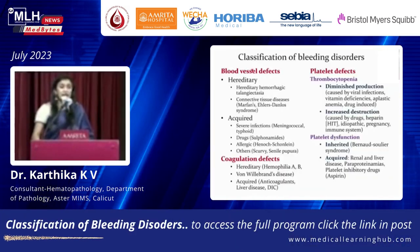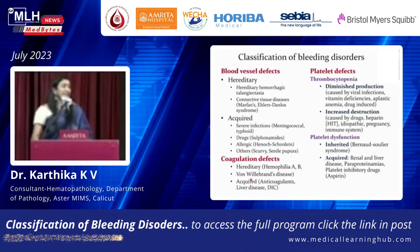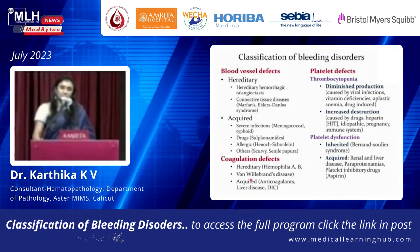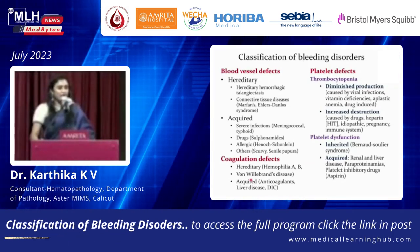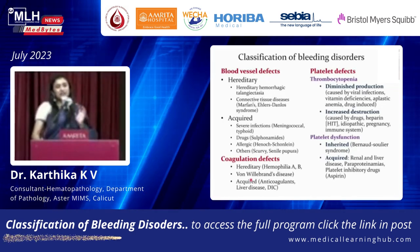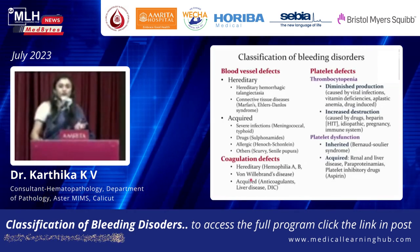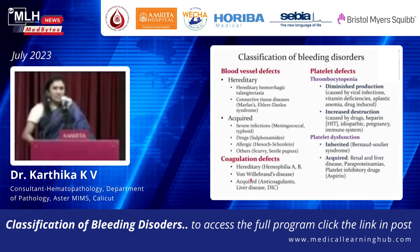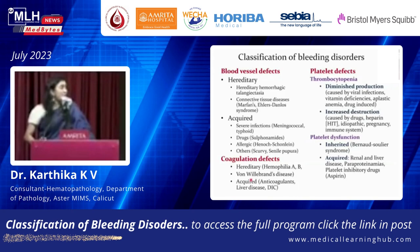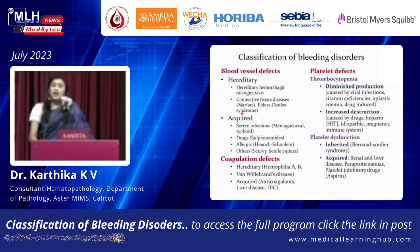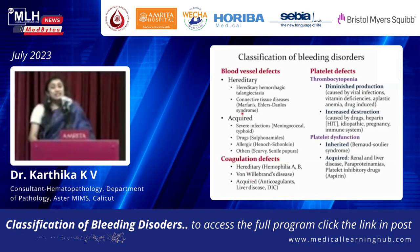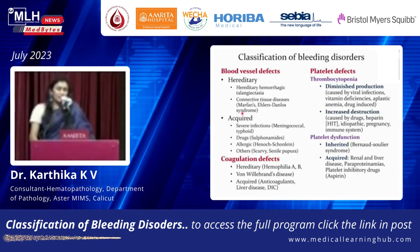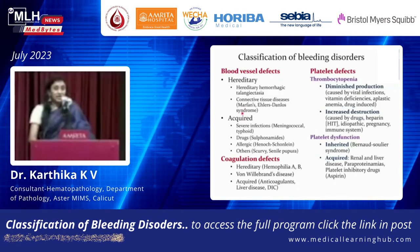Bleeding can occur in the blood vessel, in the platelet, or in the coagulation pathway. In the blood vessel, it can be acquired or inherited. Any defect in the structure or function of the blood vessel can cause bleeding. Common examples are vasculitis, scurvy, and connective tissue disorders. These are not commonly seen in the hematology OPD; they are seen in other departments and are associated with other symptoms.